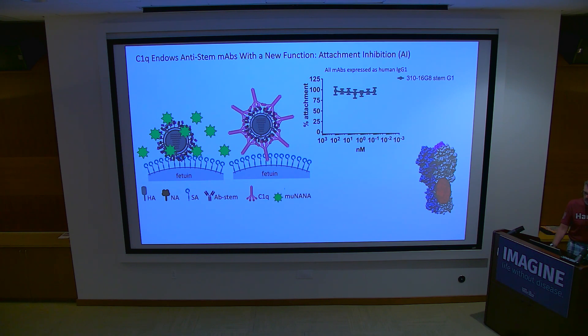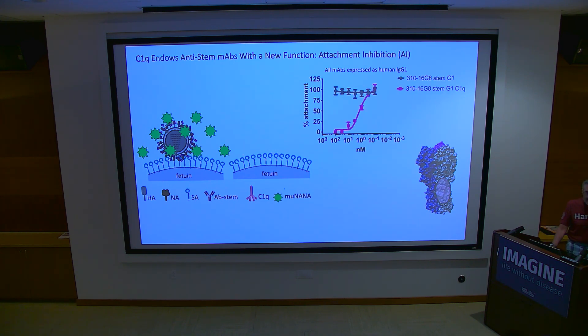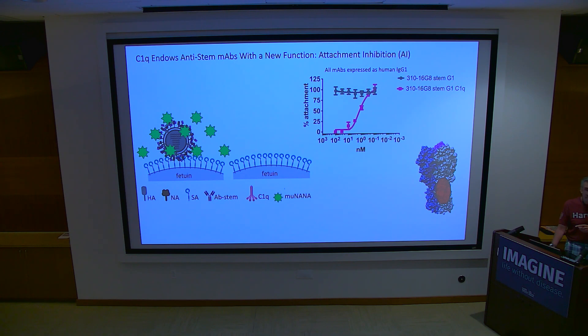The stem antibody doesn't block attachment — that's what's published and that's true. But the stem antibody plus C1Q blocks attachment pretty well — we can completely block attachment, 100%.